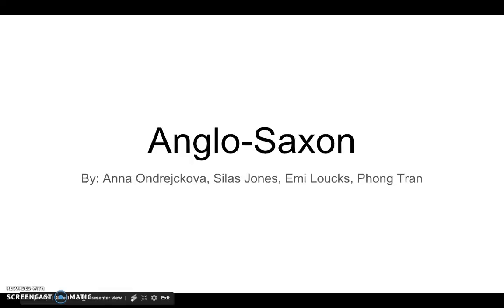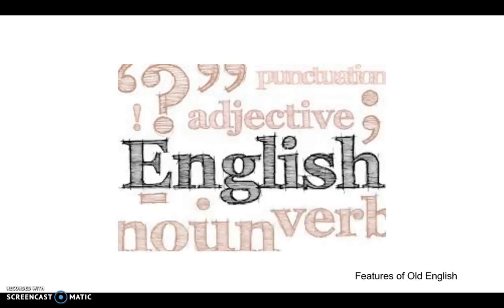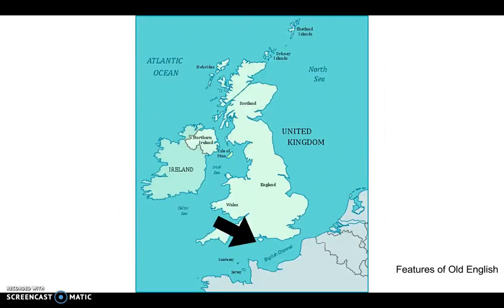The current language of English has a complex history involving the Germanic tribesmen known as the Anglo-Saxons. For the most part, England is extremely isolated from the rest of the European continent. It is separated from Europe by the English Channel, which made it harder to communicate and to get invaded from other groups of people.